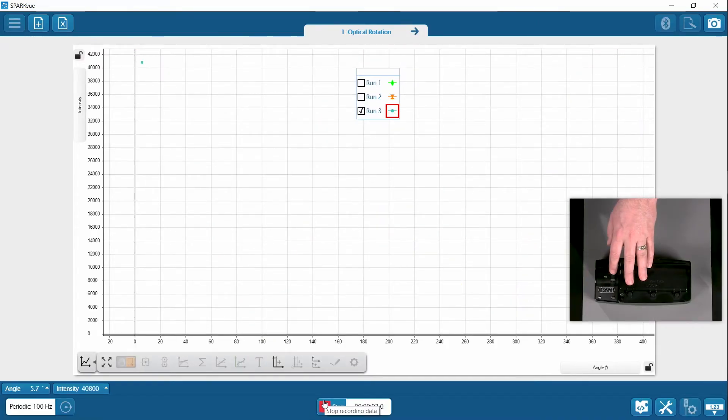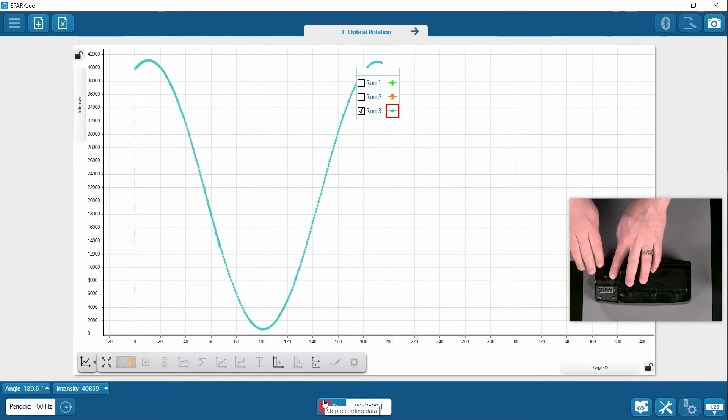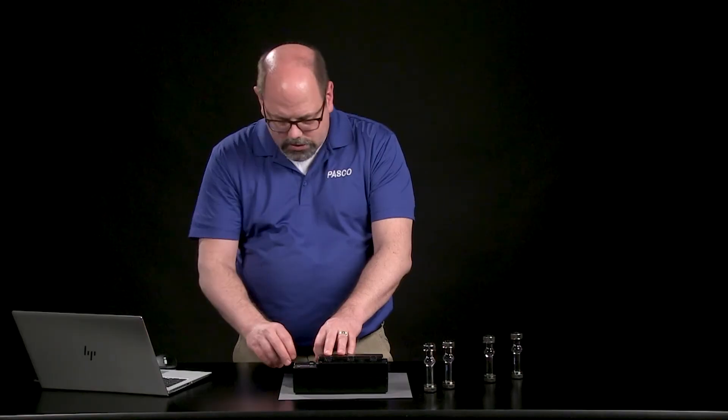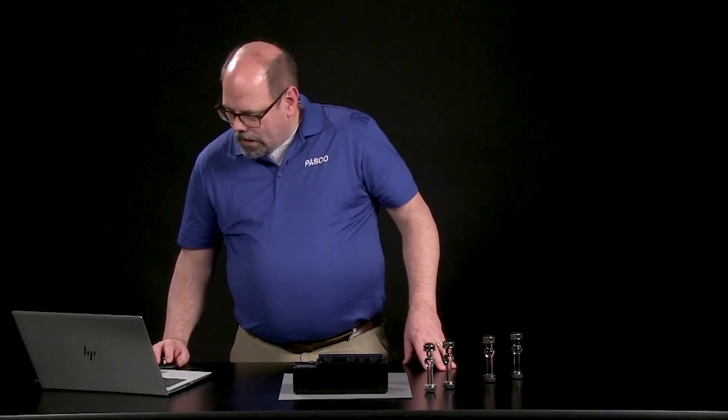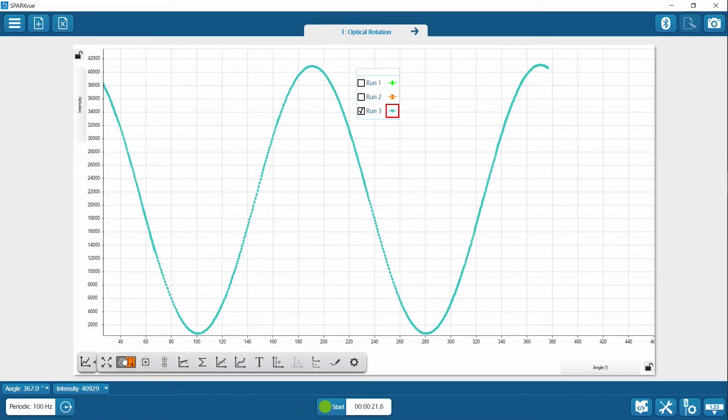I must have moved it just far enough ahead so it's closer to the zero axis right here, and I'm going to take that data. Zero gets determined by where that wheel is set when the power is on or when you connect to it. So I'm just putting it a little ahead of that mark. Let's go ahead and stop the collection, find the peak.